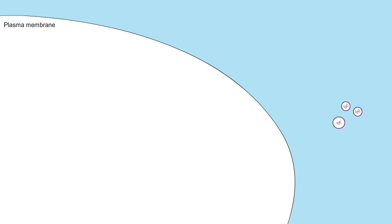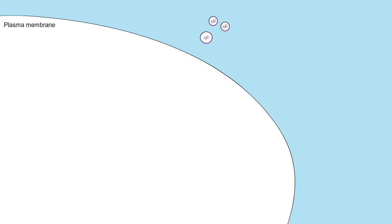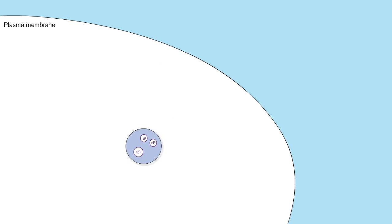But how is retrofusion involved in exosome biology? It is thought that when exosomes encounter a recipient cell, they can be endocytosed, facing two possibilities: degradation or escape through retrofusion, the latter of which would allow them to release their content into the cytosol. For this reason, retrofusion is considered to be an important pathway for exosome uptake.